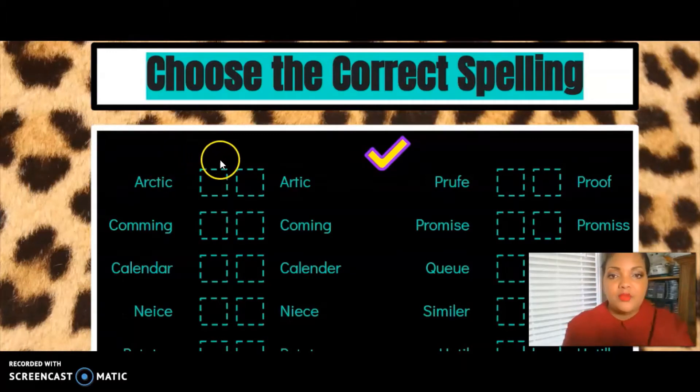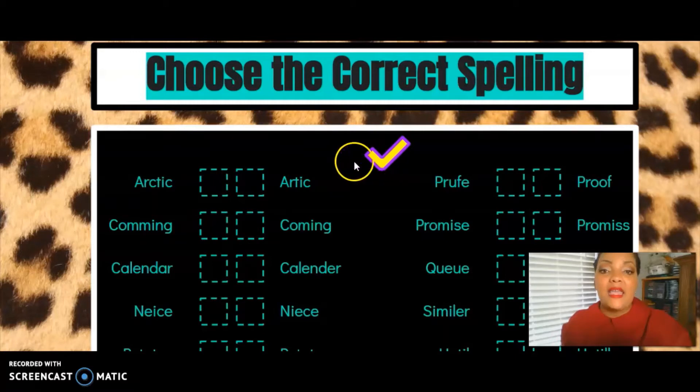The next one is an example, choose a correct spelling. So the students will take this checkmark and they'll drag it over to the correct spelling. And so they'll continue doing that for each one of these.